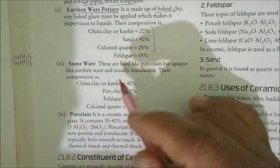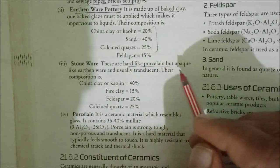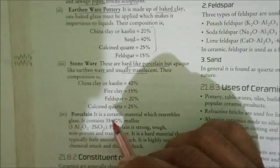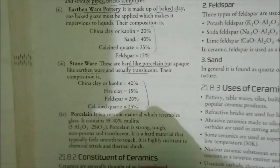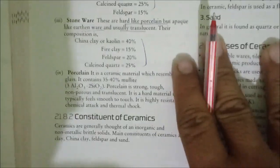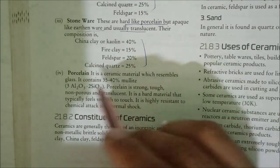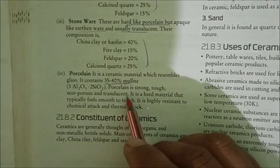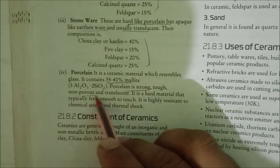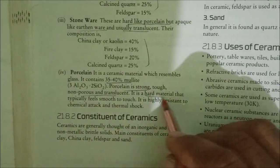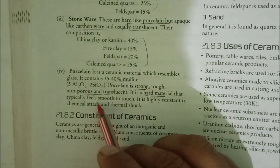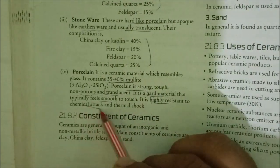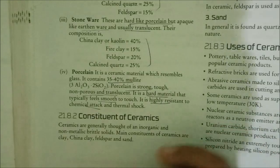We have stoneware, which is hard like porcelain but opaque like earthenware and usually translucent. We have porcelain, a ceramic material which resembles glass. It contains 35 to 40 percent mullite. It is strong, tough, non-porous, translucent, and is a hard material that feels smooth to the touch. It is highly resistant to chemical attack and thermal shock.